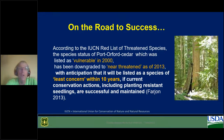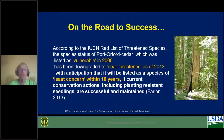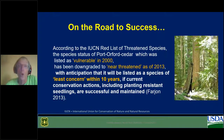Here's what you'd like to see: the IUCN threatened species assessment. Back in 2000 they listed Port Orford cedar as vulnerable due to the pathogen. As of 2013 they downgraded it to near threatened, with the anticipation that it would be listed as species of least concern within 10 years if current conservation actions — including planting resistance seedlings — are successful and maintained. That's what you want to hear: you're on the road to success.